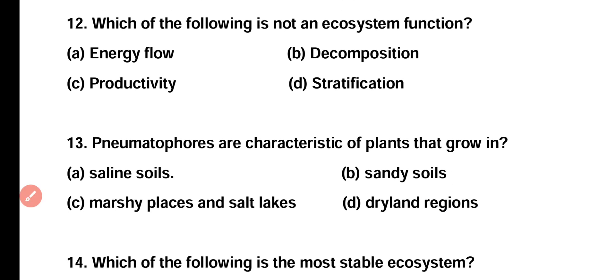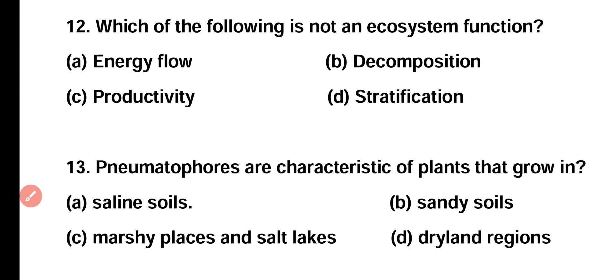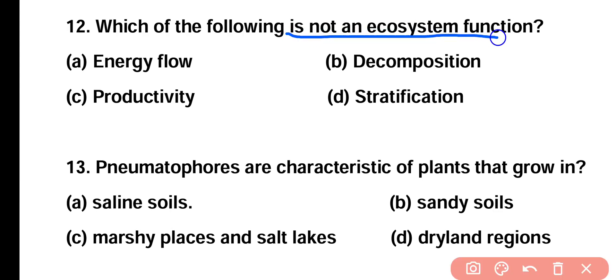Question number twelve: which of the following is not an ecosystem function? Energy flow, decomposition, productivity, or stratification? Correct answer is option D. Stratification is the vertical distribution of different species in an ecosystem and it is not a function of the ecosystem overall.